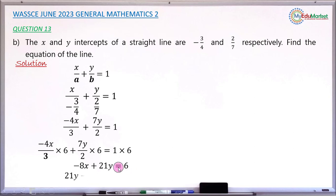Now rearranging, you now have 21y minus 8x minus 6 equals 0. So that is shifting everything to the left hand side, and this is now the equation of this very line, and this answers the question.